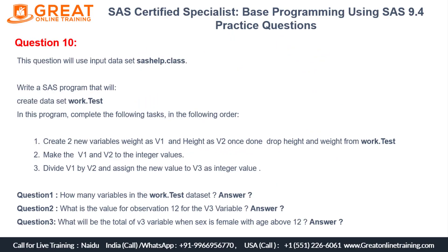In question number 10, we need to take the input dataset sashelp.class. Based on that, we need to write a program to create a new dataset work.test and complete the following three tasks. First, create two new variables: weight as v1 and height as v2, then drop the original height and weight variables. Step two: make v1 and v2 integer values — regardless of the source value, the new variables v1 and v2 should be integer values.